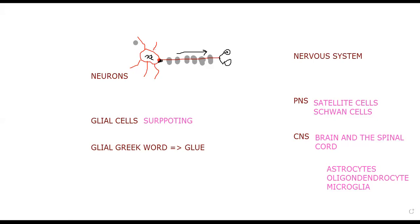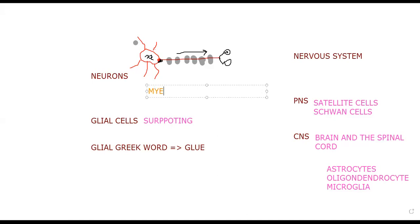Because myelin sheaths are bad conductors, the action potential cannot travel directly along the myelinated axon. Instead, the electrical signal must jump between the gaps in the myelin sheath.